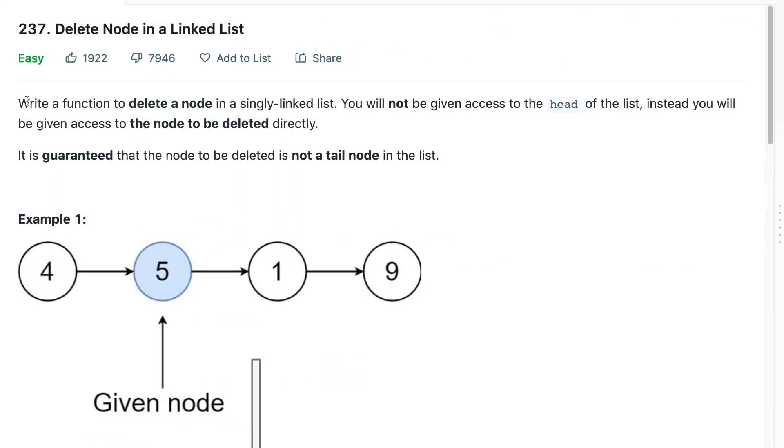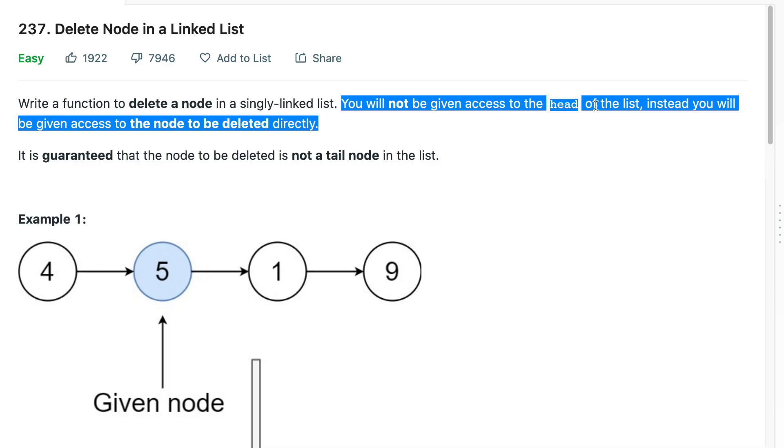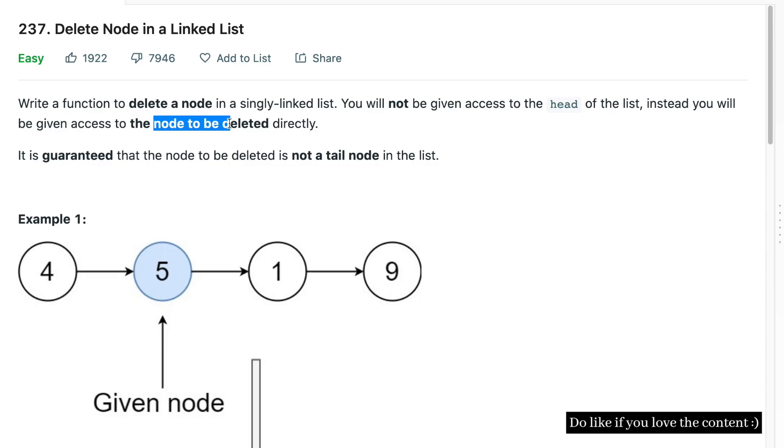From the SD sheet. Now the problem states that you'll have to write a function to delete a node in a singly linked list. You will not be given access to the head of the linked list - usually you're given the head - instead you'll only be given the node which has to be deleted.